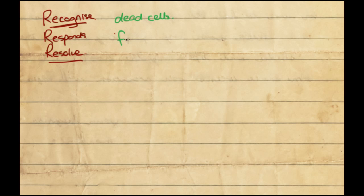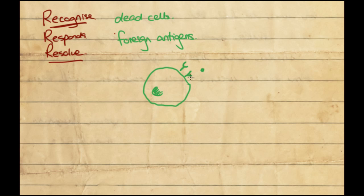These phagocytes ingest dead cells and also ingest foreign antigens. In order for cells to recognize things, they have receptors on their surface. These receptors are molecules which are able to recognize other specific molecules — for example, receptor A will be able to recognize a particular molecule B. That's the way cells, using receptors on the surfaces of their membranes, recognize other molecules, substances, or other cells.